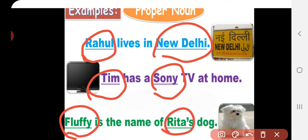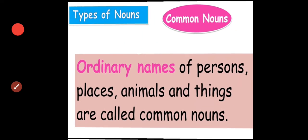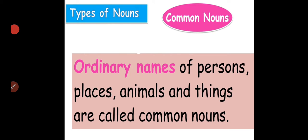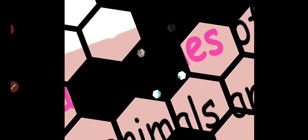Fluffy is a name given to a dog, and Rita is a special name given to a girl. So these underlined words are called proper nouns. Now let us look into common nouns. Common nouns are the ordinary names of persons, places, animals and things. Let us look into some examples.